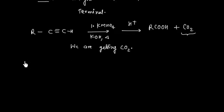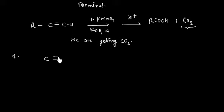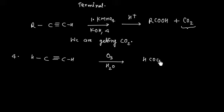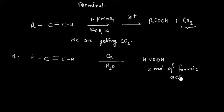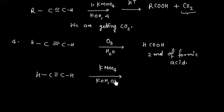Now, if I have both sides hydrogen — that is, acetylene — and if I do ozonolysis, I will get two moles of formic acid. Again, this differs from KMnO4: if this alkyne is treated with KMnO4 in basic medium, we will get two moles of carbon dioxide.